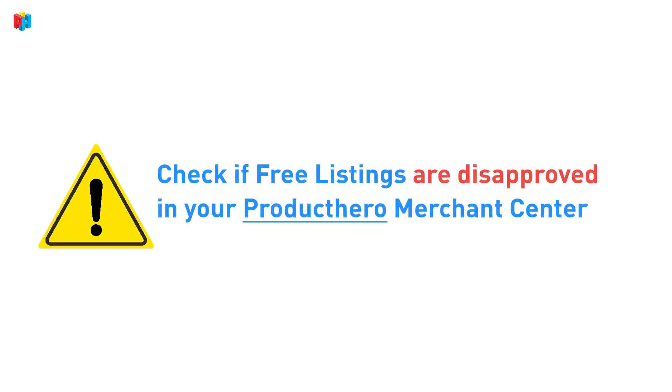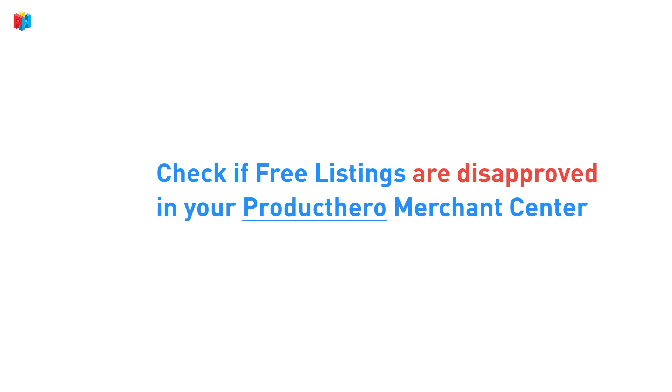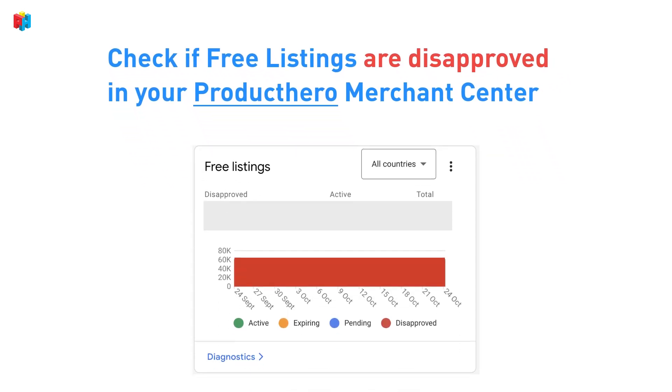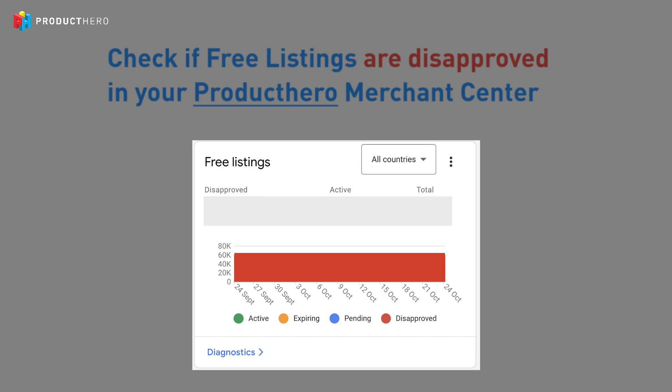Before setting up free listings, there are several things you should keep in mind. First, check if your free listings are disapproved in your Merchant Center that is active on ProductHero CSS. You can check if your Merchant Center is active for free listings through the Overview tab and the Products Overview tab in your Merchant Center. If your free listings are disapproved, stay tuned to get them approved again.